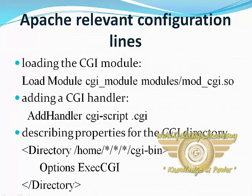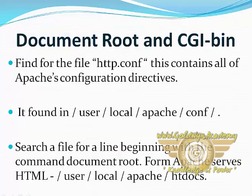Describing the properties for the CGI directory: inside the Directory directive, for example Directory /home/.cgi, we place the configuration code for the CGI directory. Now we come to the topic of document root and the cgi-bin — try and find the file.